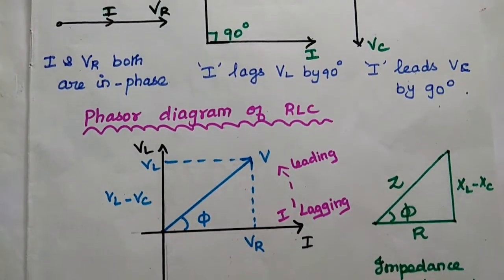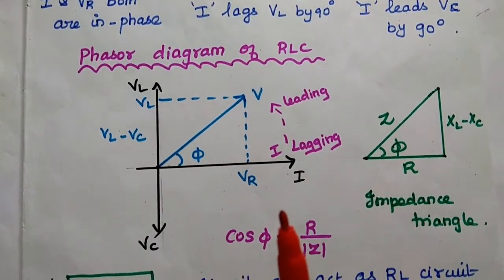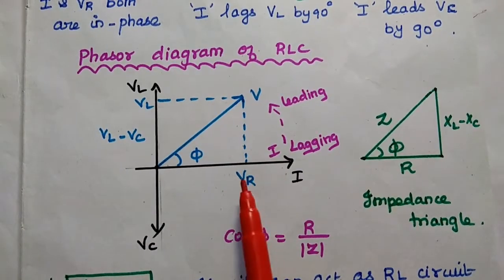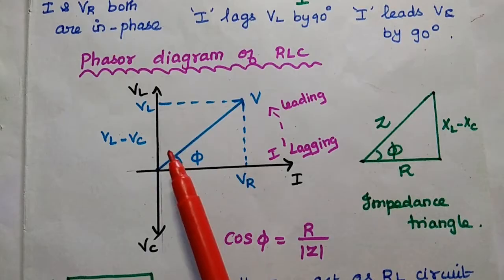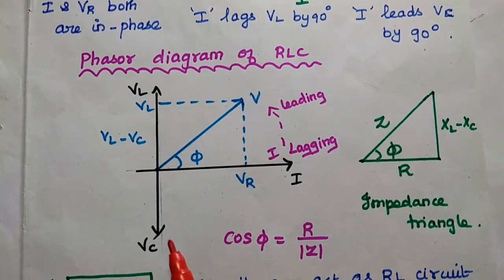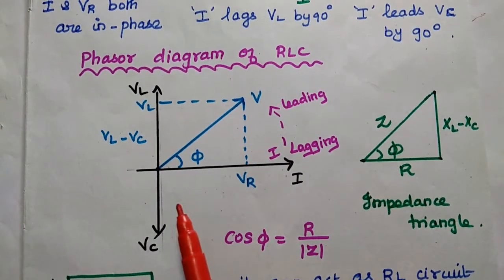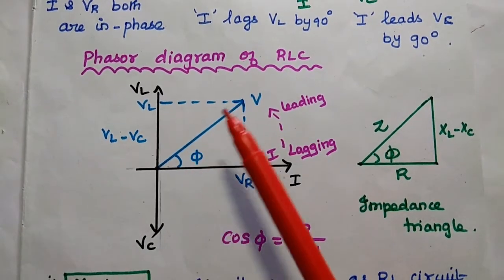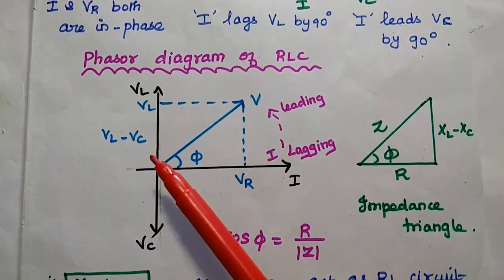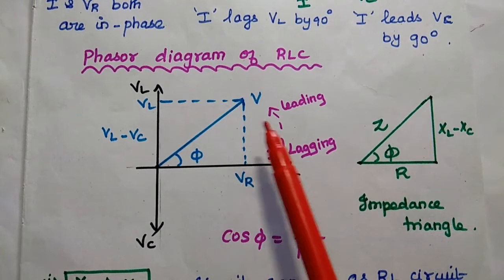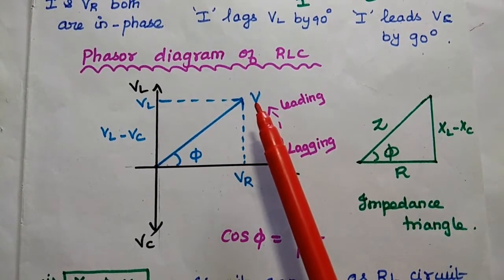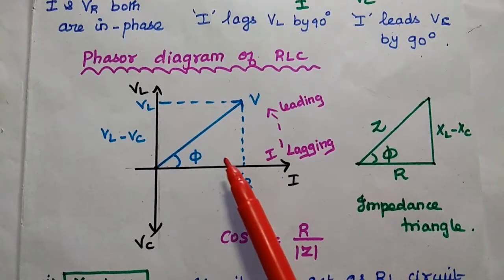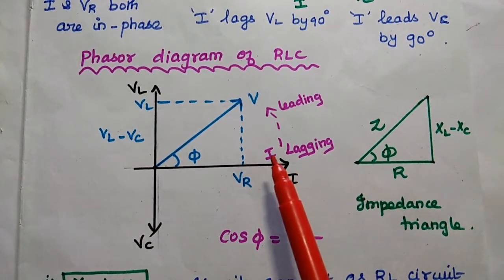Next, we draw the phasor diagram for the RLC series circuit. The current is in phase with the resistive voltage Vr. In case of the inductor, the current is 90 degrees lagging from VL; for the capacitor voltage, it is 90 degrees leading. When we combine all three together, we get the resultant phasor diagram, where we consider Vl − Vc on one axis and Vr on the other. The magnitude of V is the square root of Vr² + (Vl − Vc)², with phase angle φ.